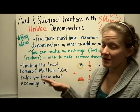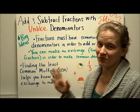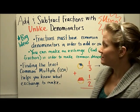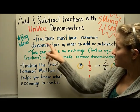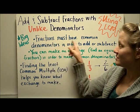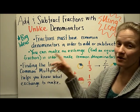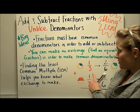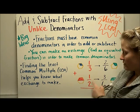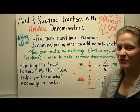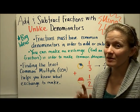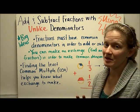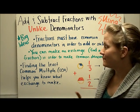So three of the big ideas before we get started with the steps. First, fractions must have common denominators in order to add or subtract them. So for example, one-third plus one-half — we can't do it yet because the denominators are not the same.